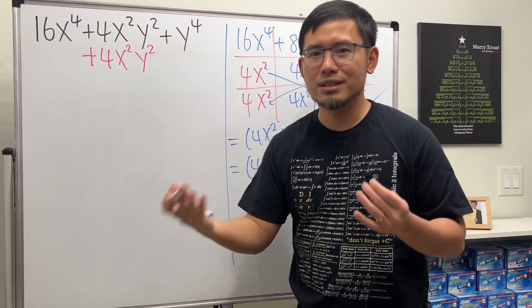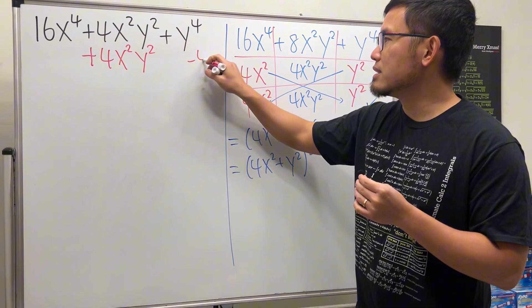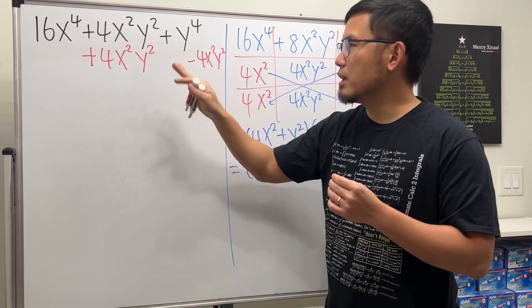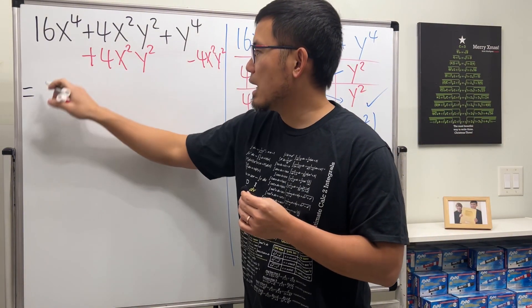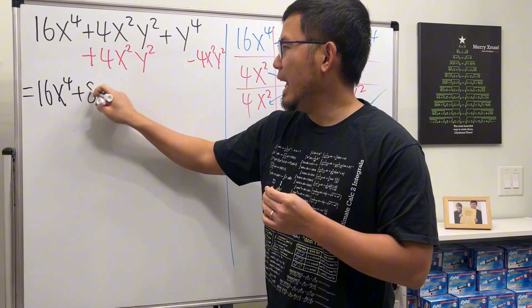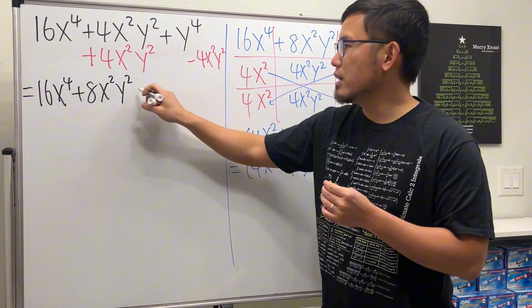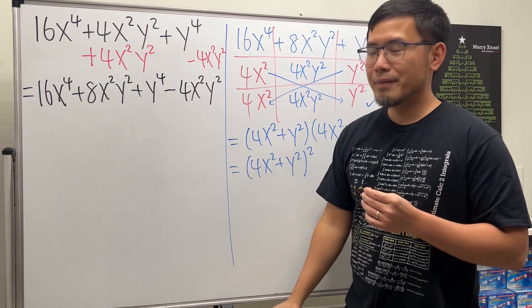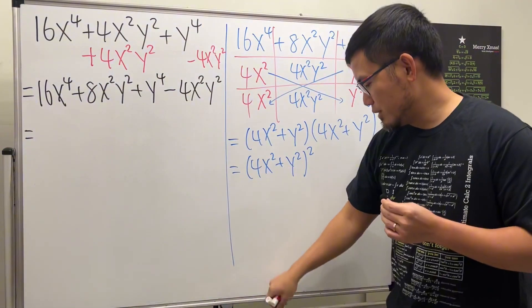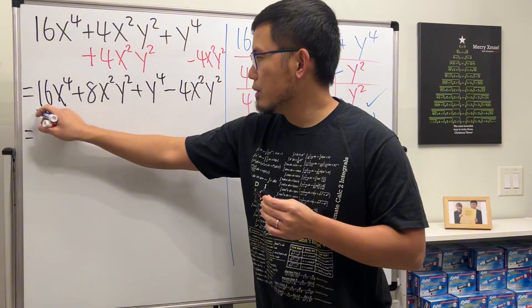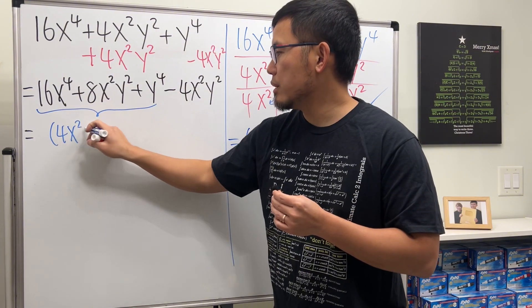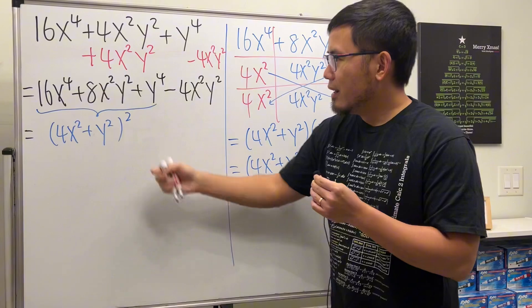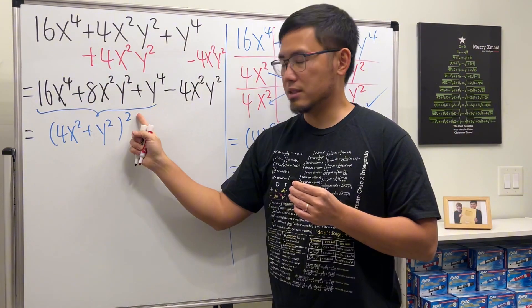Here's what I mean: go ahead and add 4x²y², but we can't just do that without changing the whole expression. It's okay because we also subtract 4x²y² at the end — the positive and negative cancel to zero. Combining, this becomes 16x⁴ plus 8x²y² plus y⁴ minus 4x²y². The first three terms give us a perfect square: (4x² + y²) squared.